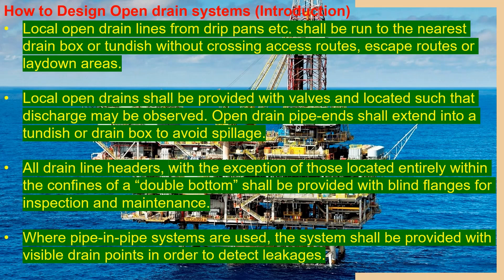Open drain pipe ends shall extend into the header or drain box to avoid spillage. All drain lines, with the exception of those located within the confines of a double bottom, shall be provided with blind flanges for inspection and maintenance. Where pipe-in-pipe systems are used, the system shall be provided with visible drain points in order to detect leakage.